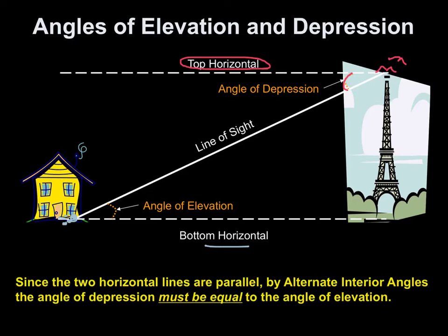The line of sight is forming a transversal between two parallel lines. And then, by alternate interior angles, you see the Z, alternate interior angles, the angle of depression is equal to the angle of elevation. So that's the big idea behind angles of elevation and depression.